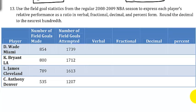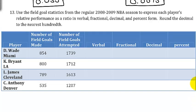In this last example, we're going to fill in this big table. Use the field goal statistics from the 2008-2009 NBA season to express each player's relative performance as a ratio in verbal, fractional, decimal, and percent form. Round the decimals to the nearest hundredth if you need to. Hundredths means two decimal places.